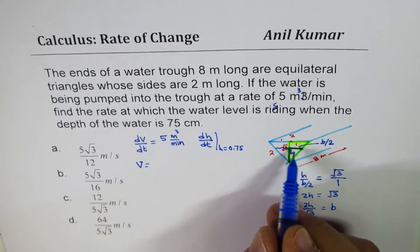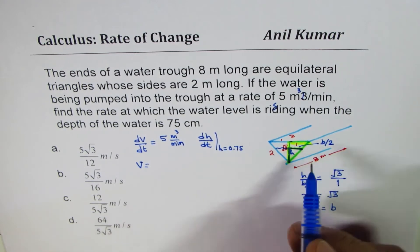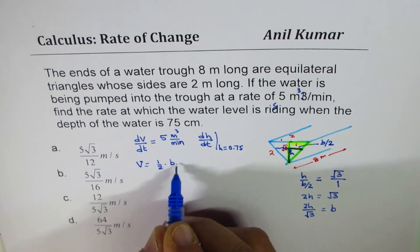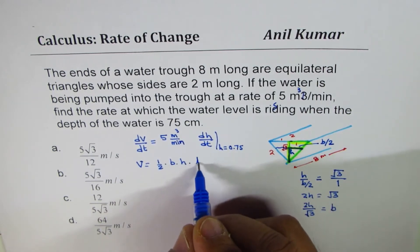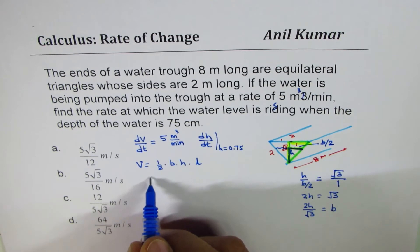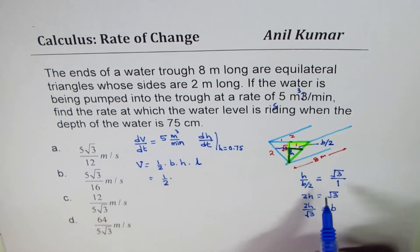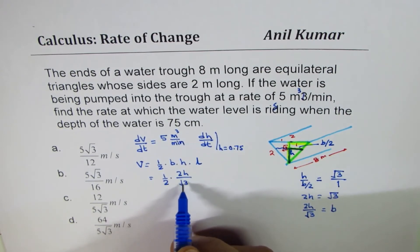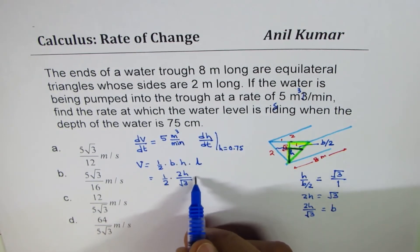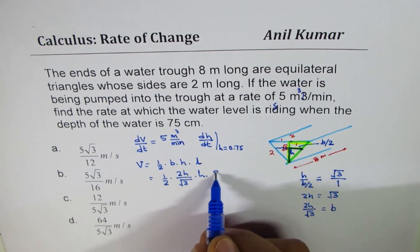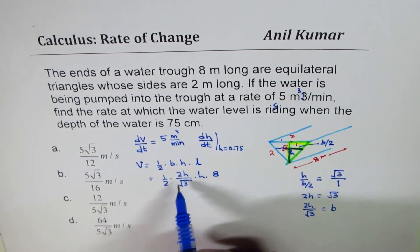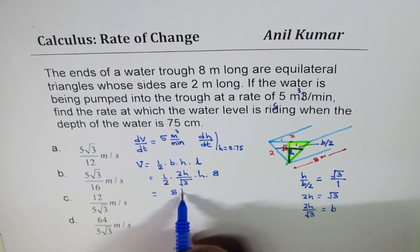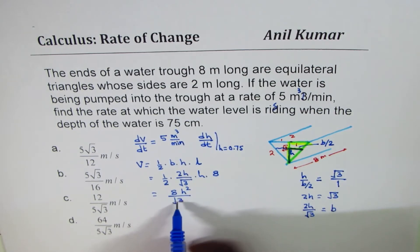The volume of the triangular trough with length 8 meters is going to be half base times height times the length L. So V equals one-half times (2h/√3) times h times 8. The 2 and 2 cancel, giving us V equals 8h² over √3.